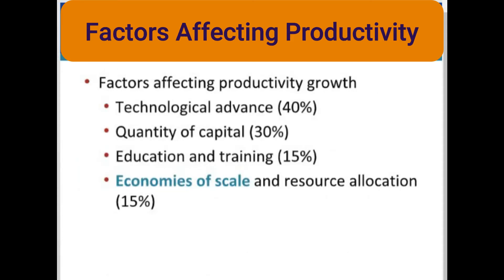There are five factors that, when combined, appear to explain changes in productivity growth rates. The largest contributor is technological advance, which accounts for approximately 40% of productivity growth, generated by the discovery of new knowledge. The quantity of capital explains roughly 30% of productivity growth — more and better plant and equipment make workers more productive. Education and training, economies of scale, and resource allocation account for the remaining productivity growth.